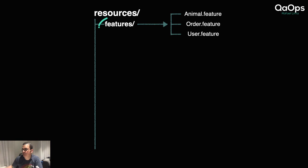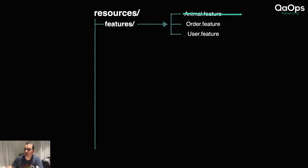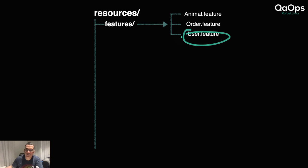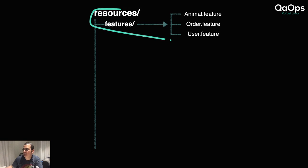Diving deeper into the code structure in Java, we're going to have a resources folder which will contain the feature files. This is the default per Cucumber documentation, though you can put feature files anywhere you like. In the features folder, we'll have feature files for each area of functionality — an animal feature for dealing with animals, an order feature for making and buying orders, and a user feature for the buyer — covering searching, storing, adding, deleting, and so on.